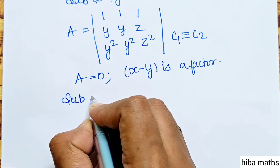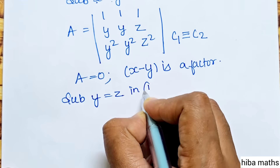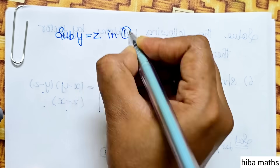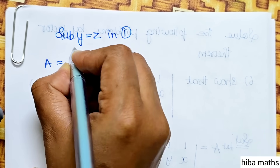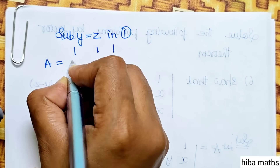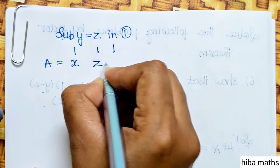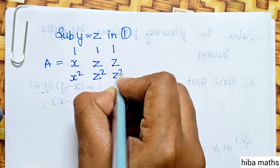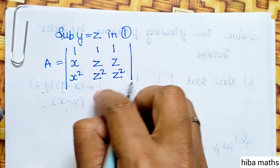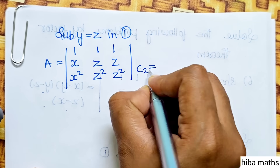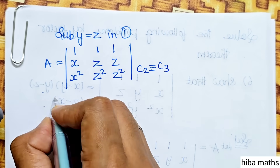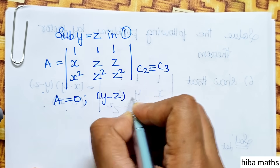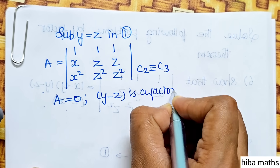Next, substitute y equal to z in matrix 1. Then A has entries: 1,1,1; x, z, z; x squared, z squared, z squared. The 2nd column and 3rd column are identical, so A equals 0. Therefore y minus z is a factor.